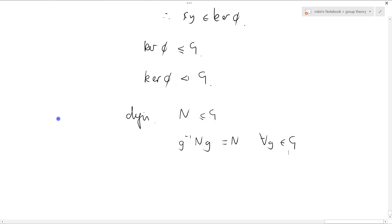OK, so let's prove that this relationship holds for the kernel of phi. So if X is a member of ker phi, we ask, what is, we ask, what is G inverse XG?